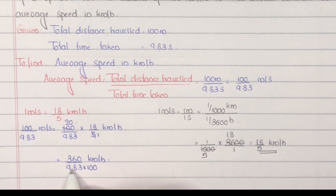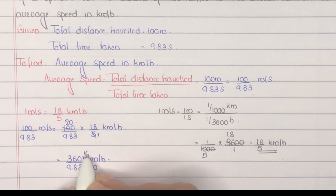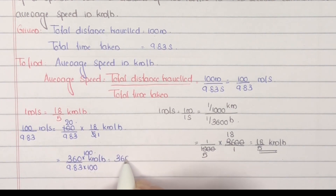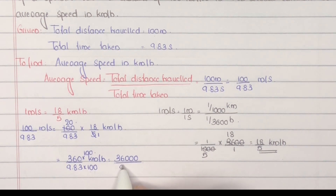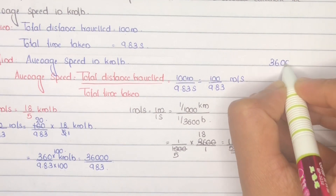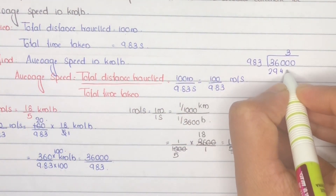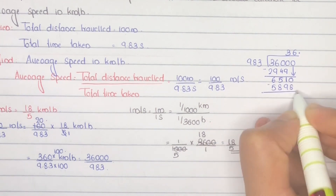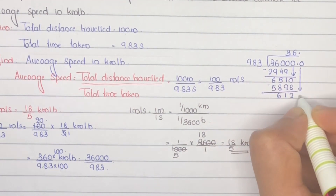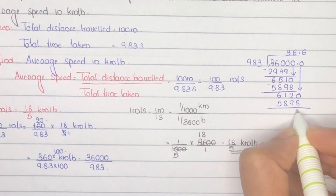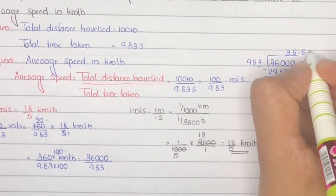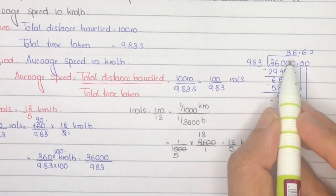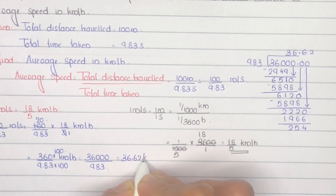To solve 360 by 9.83: since the denominator has 2 decimal digits, multiply numerator and denominator by 100, giving 36000 by 983. Dividing this gives 36.62, unit kilometers per hour.